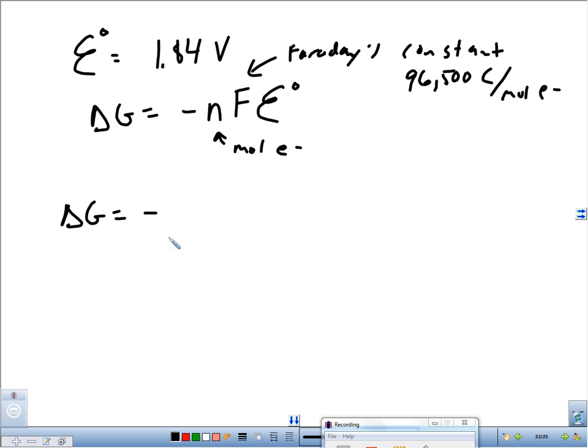So we can solve for delta G. What's going to happen to the sign of delta G when we have a positive E? It's got to be negative every time, which means it's spontaneous. Let's solve for it. Delta G equals moles of electrons. How many electrons needed to be transferred in that balanced equation? Three. So that's what we mean by moles of electrons. It's how many are in the balanced equation.